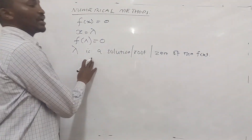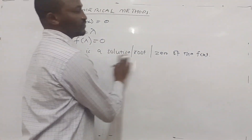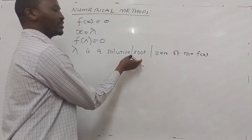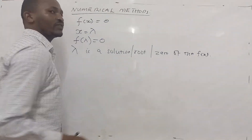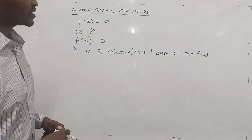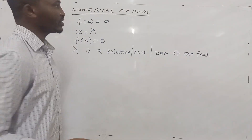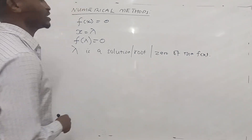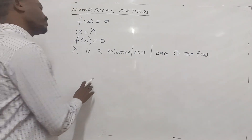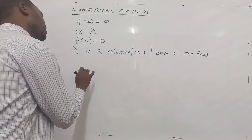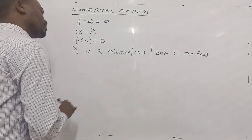Now, there are quite a number of methods of getting a zero, or a root, or a solution of the function f(x). But for this particular topic, we are only going to concentrate on iterative methods. However, I should mention we have two types of methods.